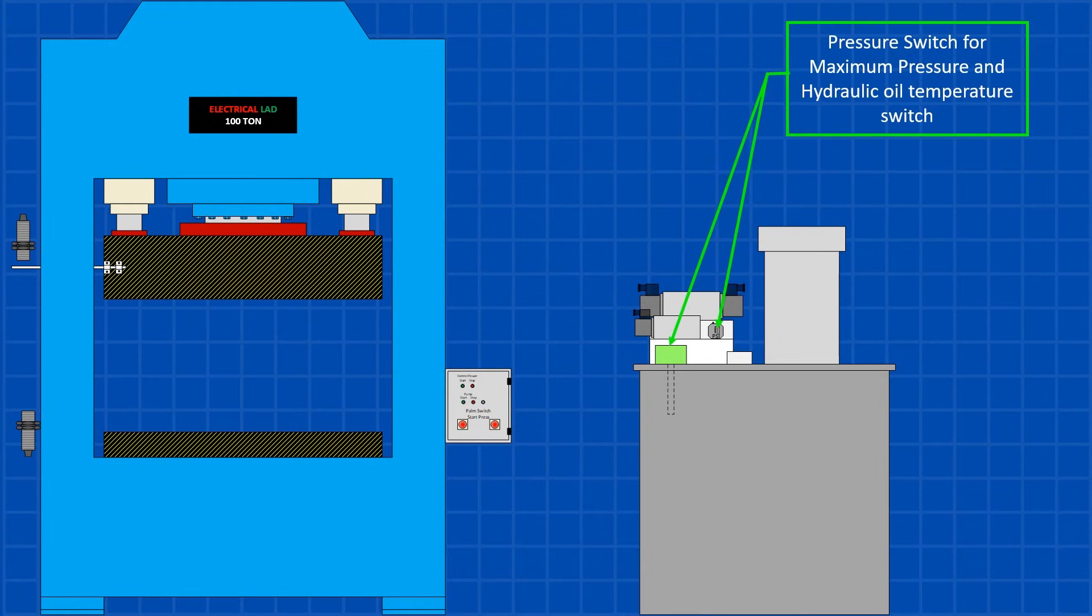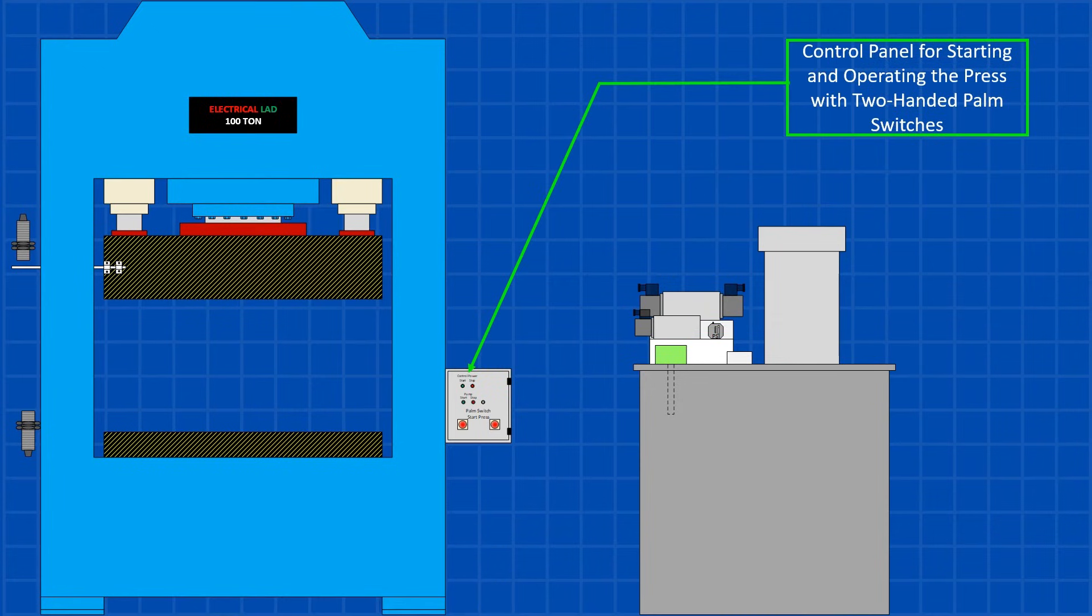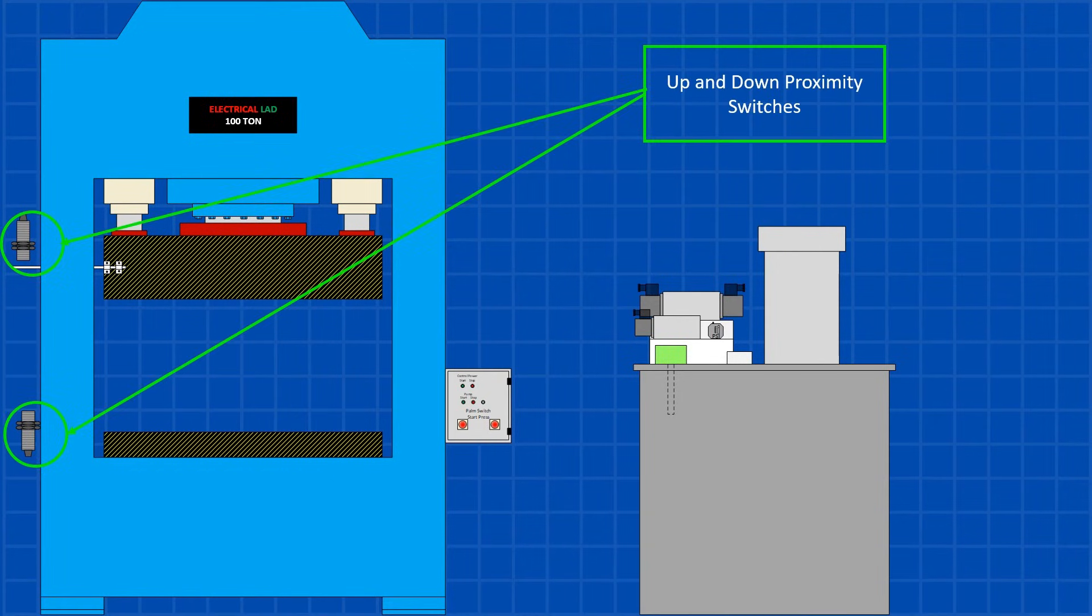Other key components include high limit pressure and temperature switches, a control panel that includes master control push buttons, an up and down selector, and two-handed palm switches. On the press, there are two proximity switches that indicate whether the press is in the up or down position.